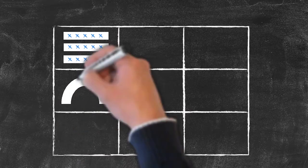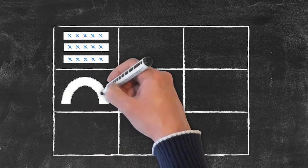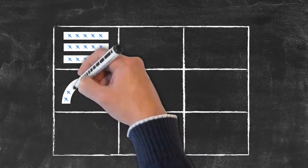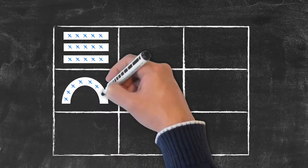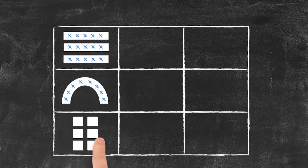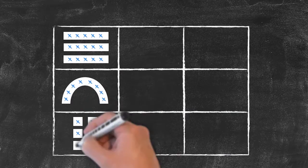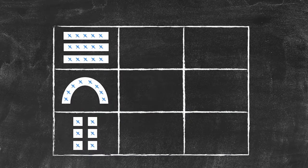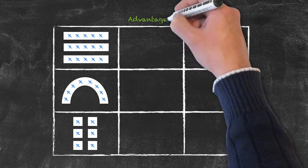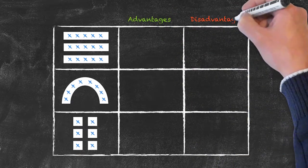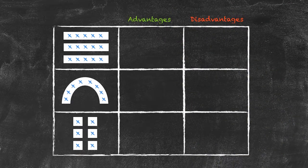The second arrangement could be the use of horseshoes or semicircles, and finally the use of individual desks. For each of these arrangements, what are the potential advantages and disadvantages of arranging our seating in this way?